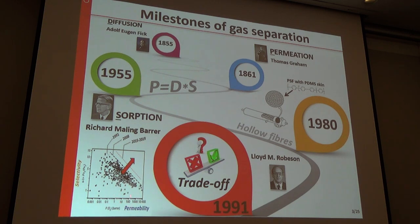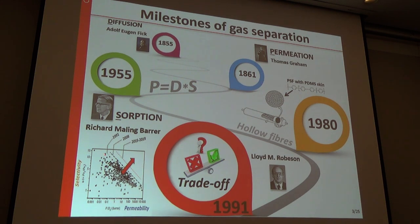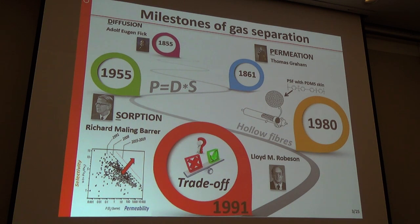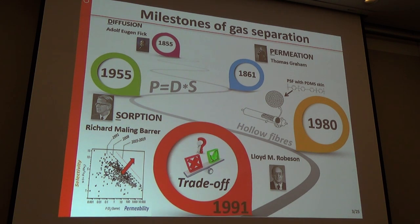The Robeson upper bound describes the relationship between the two determining properties of gas separation materials. This is a diagram where gas permeability is plotted — here is the more permeable species and here is the ratio of permeability of both gases. The line, originally published in 1991, is slightly shifting to the upper right corner, which is the holy grail for membrane analogies — the most permeable and most selective materials. Breaking the upper bound is the engine for research in membrane material science.